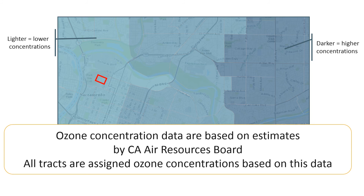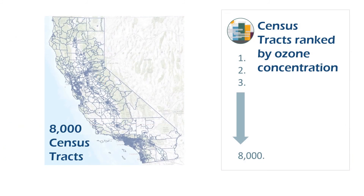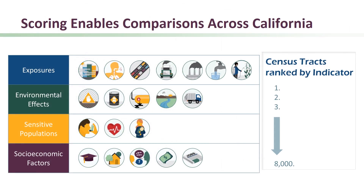Likewise, all other tracts in the state were also assigned ozone concentrations. As a result, we can characterize this outlined tract as being higher or lower in ozone when compared to other census tracts. We ranked census tracts across the state from highest to lowest based on their ozone concentrations. While other indicators use different data sources and require different types of analysis, this type of comparative indicator scoring was done for all census tracts in California when information was available.